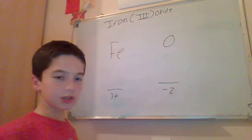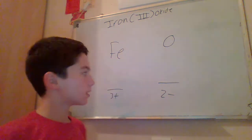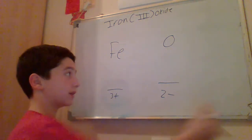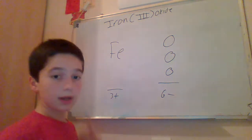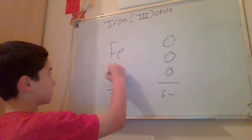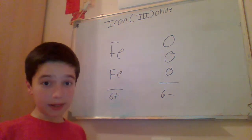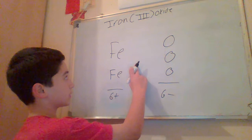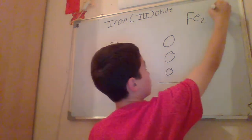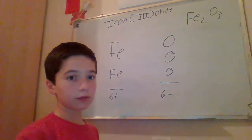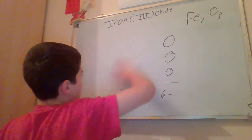The charges are not balanced: three plus and two minus. To balance them, we add two more atoms of oxygen, giving us a six minus charge. To balance six minus, we add another iron, so three plus and three plus equals six plus. Charges are now balanced. We have two iron atoms and three oxygen atoms, so the formula is Fe₂O₃.